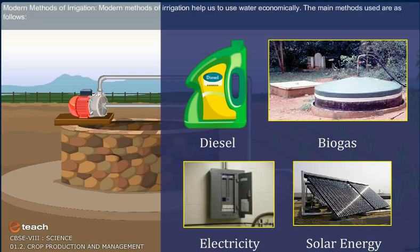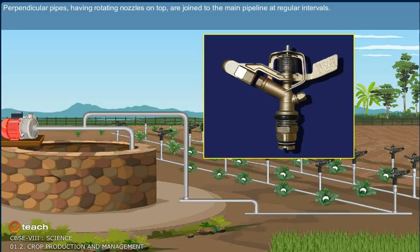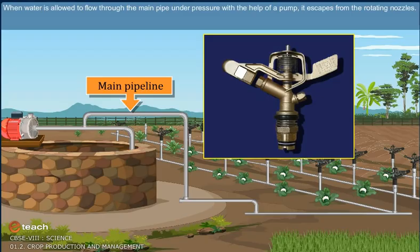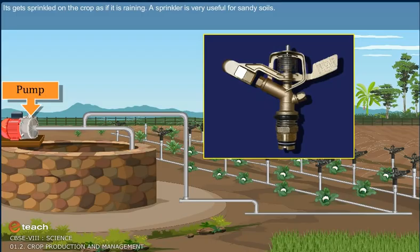Modern methods of irrigation. Modern methods of irrigation help us to use water economically. Sprinkler system: This system is more useful on uneven land where sufficient water is not available. Perpendicular pipes having rotating nozzles on top are joined to the main pipeline at regular intervals. When water flows through the main pipe under pressure with the help of a pump, it escapes from the rotating nozzles and gets sprinkled on the crop as if it is raining. The sprinkler system is very useful for sandy soil.